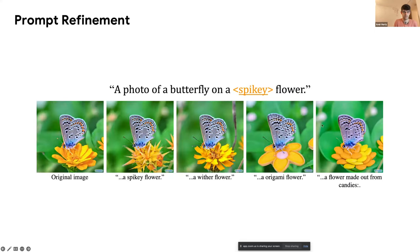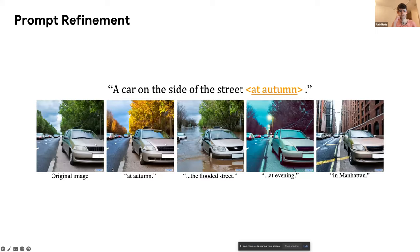This is the second application: we specify the style of the flower. We can also add some global description and change the whole image — for example, we start with a car in the street and add a description of the weather or the lighting.